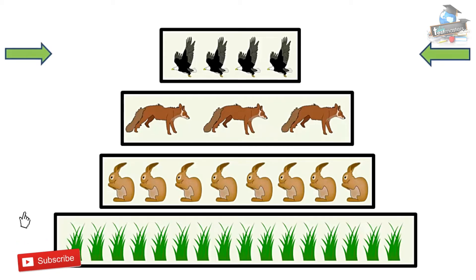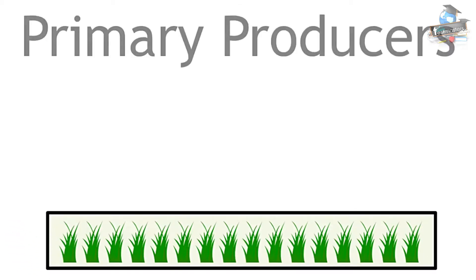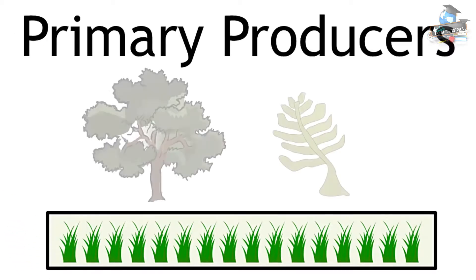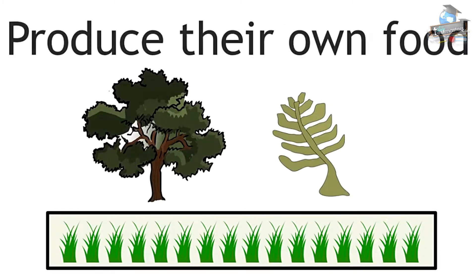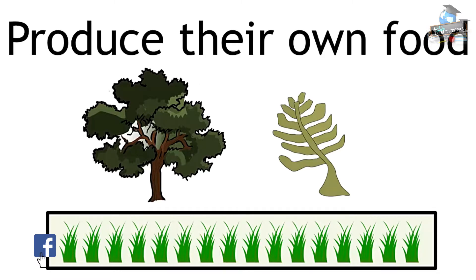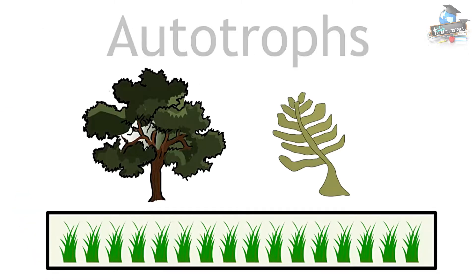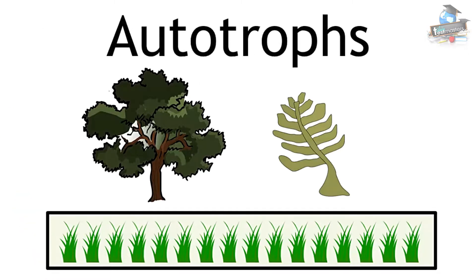The first trophic level is the primary producers, the organisms which produce their own food, usually the green plants or algae. These organisms are also referred to as autotrophs.